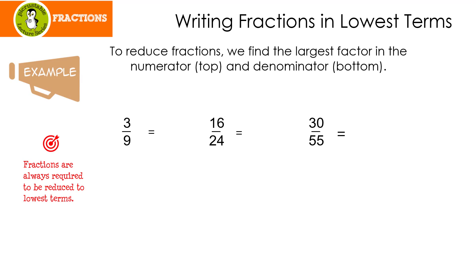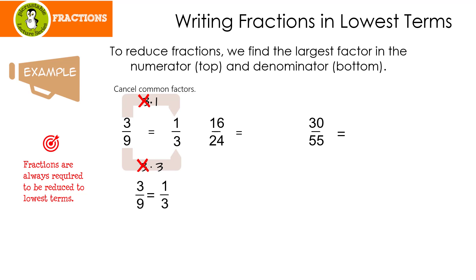Let's look at some examples. To reduce fractions, we find the largest factor in the numerator, the top, and the denominator, the bottom. Let's look at 3 ninths. The only factors of 3 are 3 times 1. Then I look at 9 — does 3 go into 9? It sure does. I'm going to cancel the common factors, which leaves me with 1 over 3. That means that 3 ninths equals 1 third.